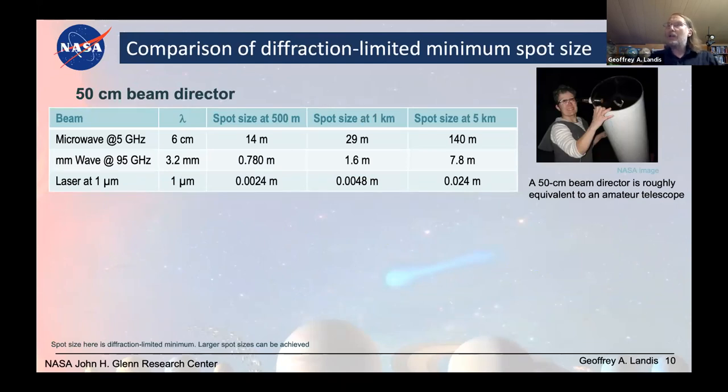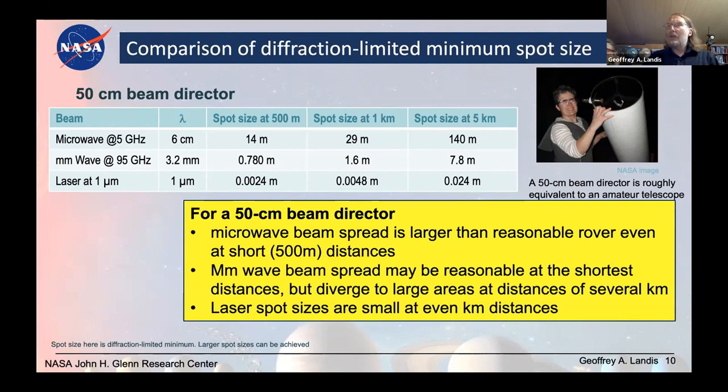So let's look at how big that spot size is. Here's a 50 centimeter beam director. That's about the size of an amateur telescope, a decent amateur telescope, but not something that you don't see if you go out to your local star party. At microwaves at one kilometer away, it's a 29 meter spot. That's huge. Millimeter waves, you get it down to 1.6 meters. But for a laser at one micron, it's a tiny spot. It's half of a centimeter. So the 50 centimeter beam director, the microwave beam is just too large, even at the shortest distance. The microwave spread out too much. Millimeter might be reasonable at the shortest distances, but pretty large areas. Once you get to kilometers, laser spot sizes are small. So this is the push for lasers.